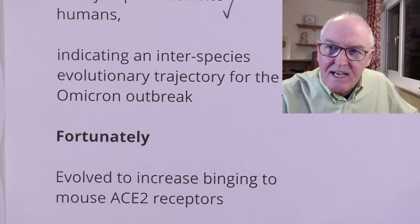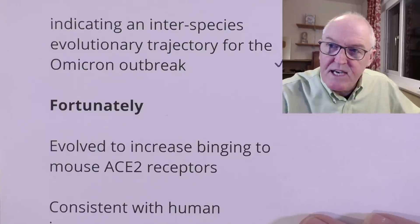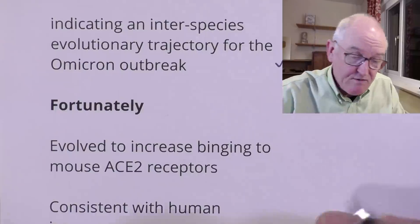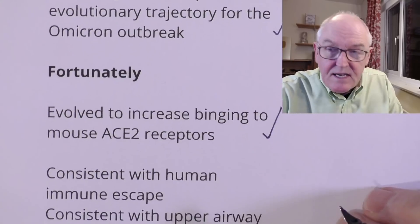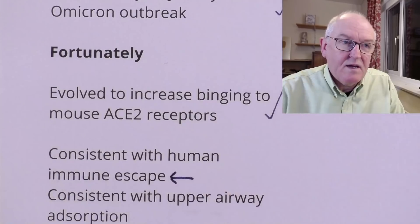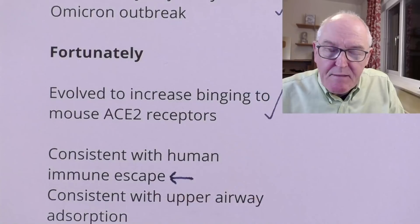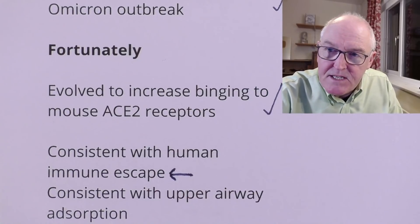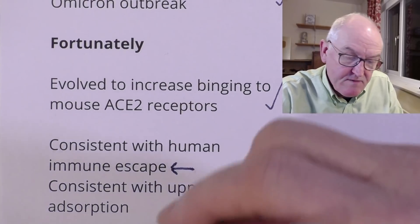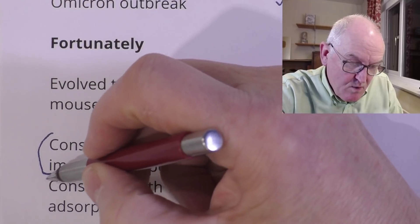Fortunately, as the virus evolved in mice, it evolved towards increasing binding to mouse ACE2 receptors, which is exactly what evolutionary pressures would suggest. That's why it's consistent with human immune escape, because the human response is designed against the wild type for vaccines and the delta type for those previously exposed. It's also consistent with upper airway adsorption of the virus — two separate important points.